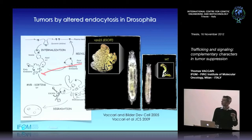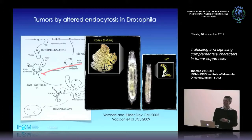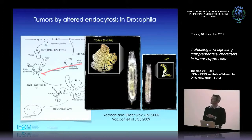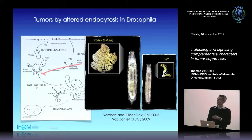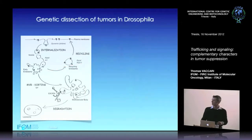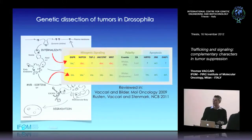When you look at mutants of endocytic genes that control trafficking, in several of those you see that if you make just the organ mutant, you get a tumor — a three-dimensional mass of cells that are no longer epithelially polarized. This specific example is by mutating a gene that controls the sorting of receptors from the early endosome, where they have been internalized, to the degradative pathway.